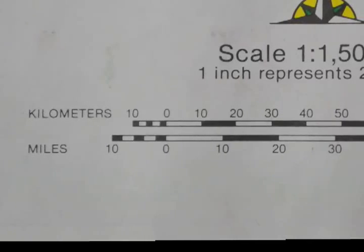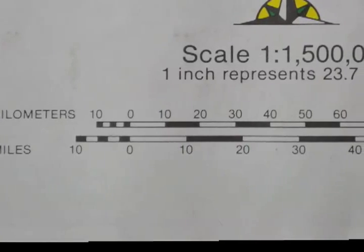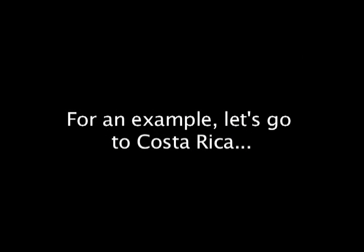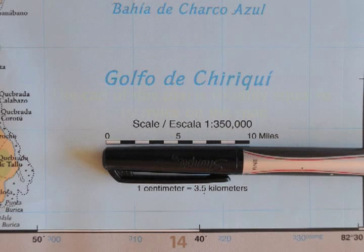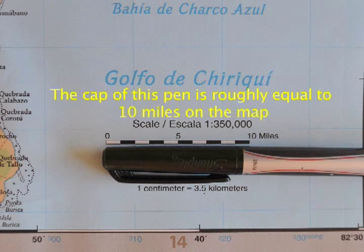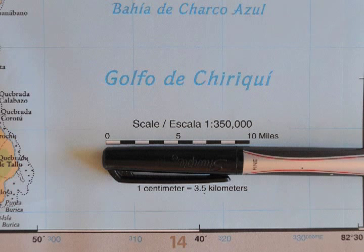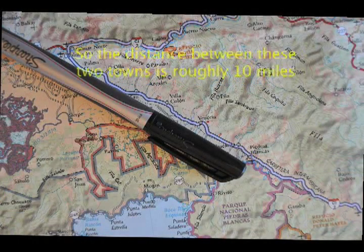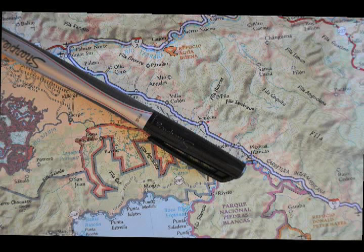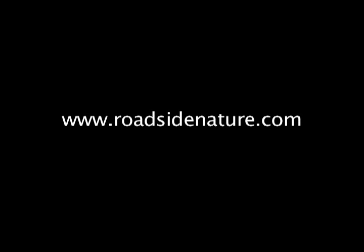You measure the map distance with a ruler or estimate it with some other object like a pencil or your finger, or whatever you happen to have with you.